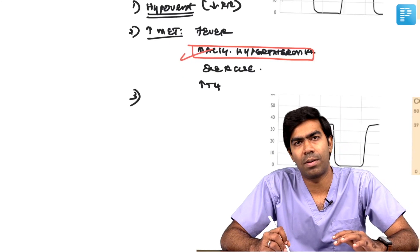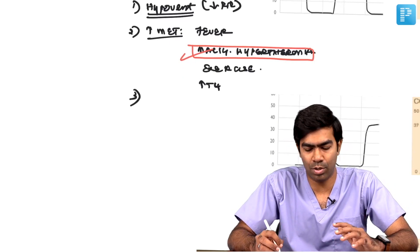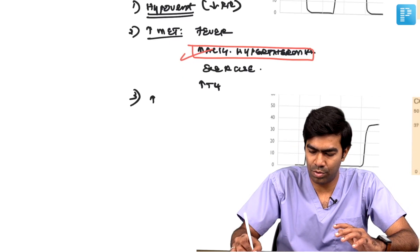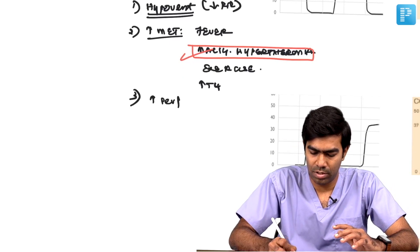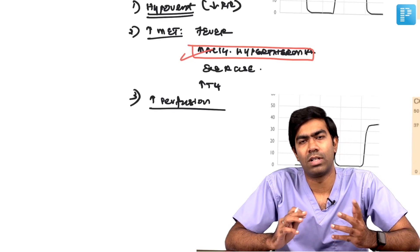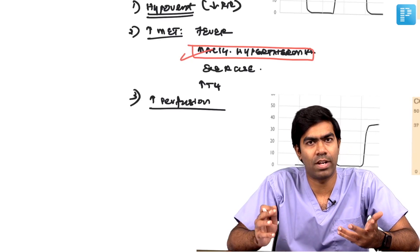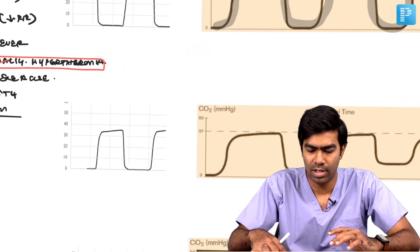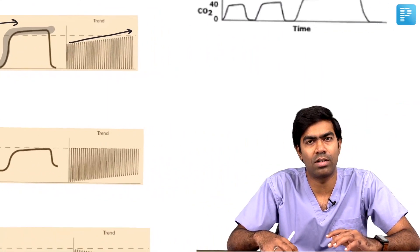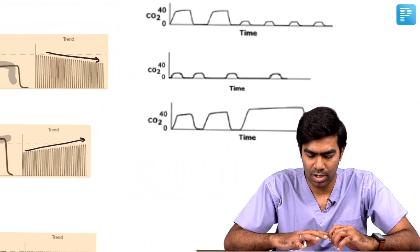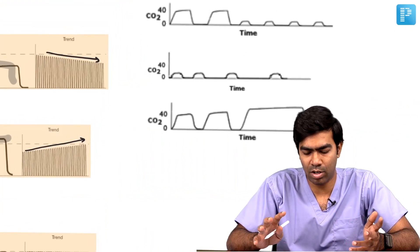Number three, apart from hypermetabolism, is increased perfusion. You can have increased perfusion to the lungs, especially during exercise — that is one example where you can have high perfusion. So those are the two main causes of increased EtCO2 beyond hypoventilation.